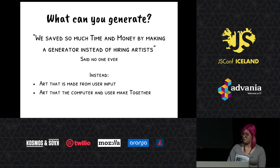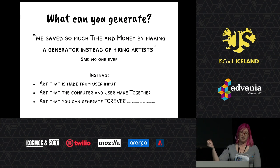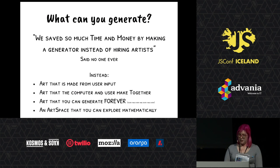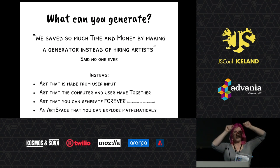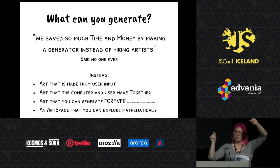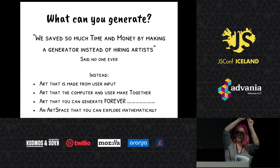You can have art that the computer and the users make together. And you can have art that just goes on forever and ever. I make a lot of Twitter bots, and if you set a Twitter bot to posting and the service never goes down, it'll just keep producing content every n seconds. You can even have an art space that you can explore mathematically. These bot-made scarves are made with roughly 100 sliders from 0 to 1, so each one has a different position of sliders. You can imagine those are vectors in a 100-dimensional space, so if I have this scarf here and this scarf here, I can mathematically say: what is the scarf directly in the middle of those?